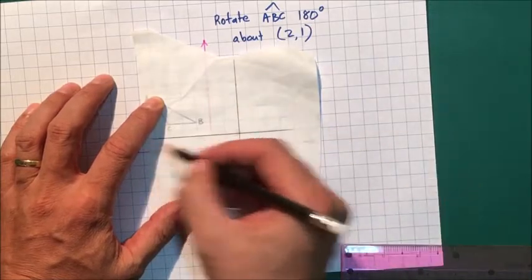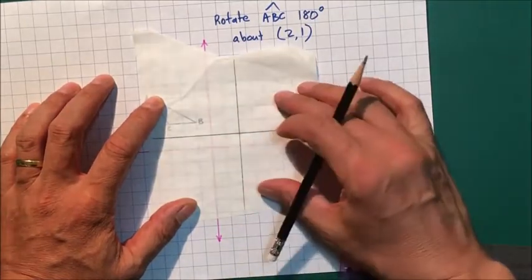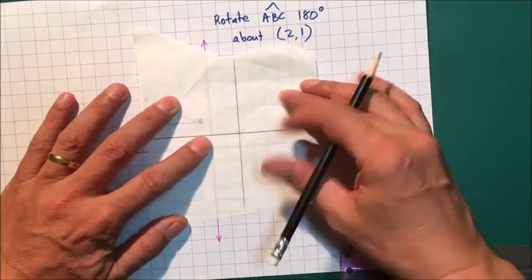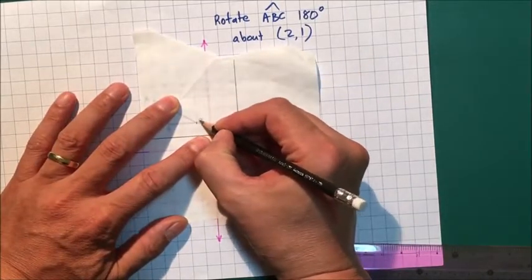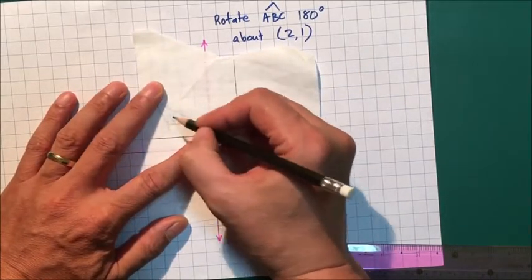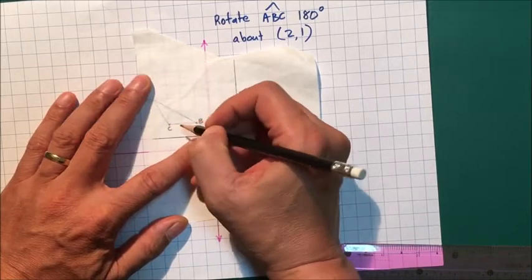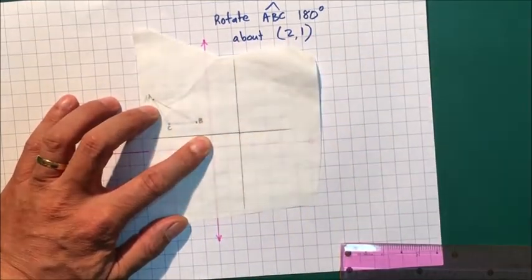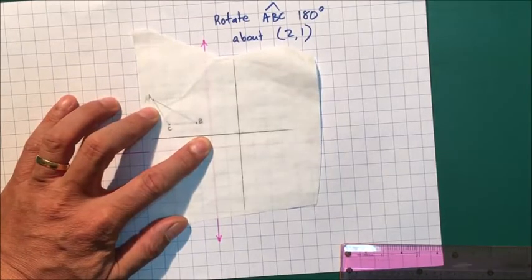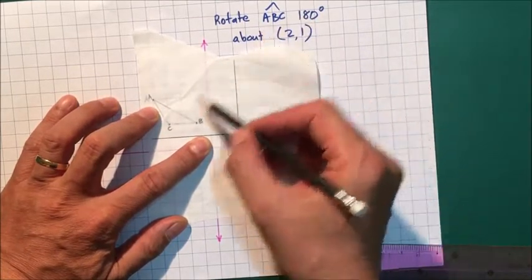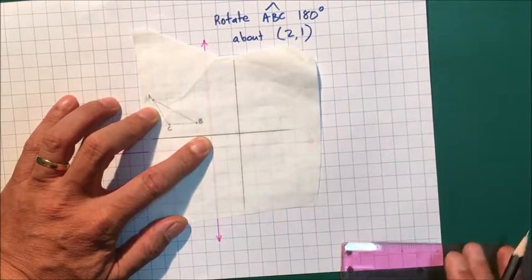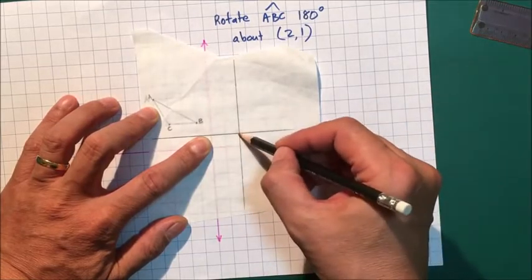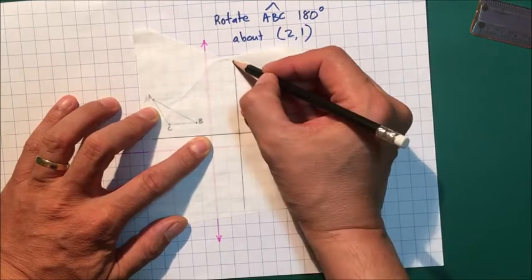Just make sure that they all sort of line up. At this point I now plot where the original points for the triangle are. So triangle ABC, I just plot where each of those points is. Now I'm going to rotate these points 180 degrees about this point here, which is 2,1.